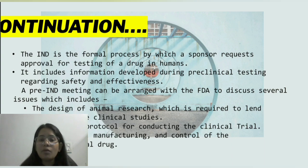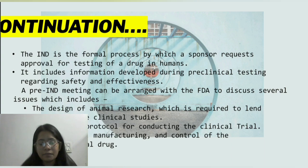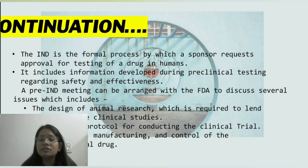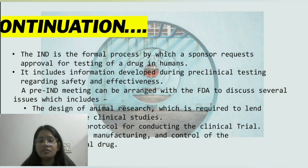The IND is the formal process by which a sponsor requests approval for testing of a new drug in humans. It includes information developed during pre-clinical testing regarding safety and effectiveness. A pre-IND meeting can be arranged with the FDA to discuss several issues, including the animal research required to lend support to the clinical studies, the intended protocol for conducting the clinical trial, and the chemistry, manufacturing and control of the investigational drug.